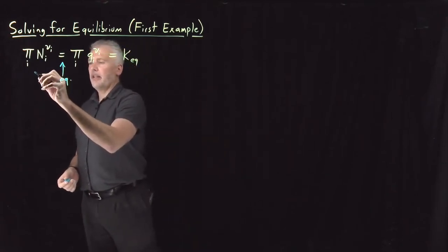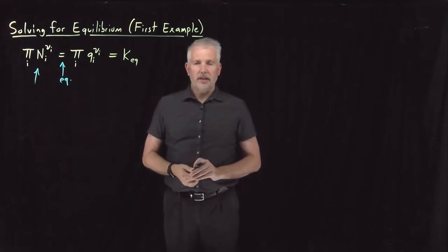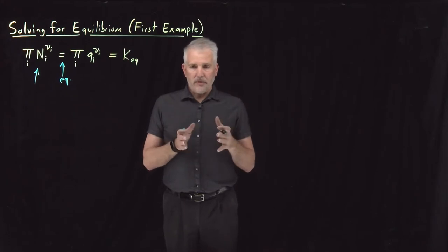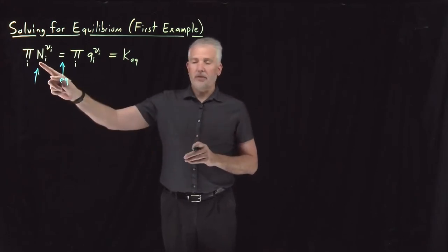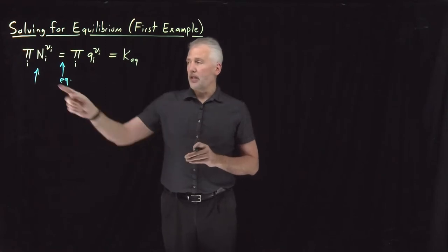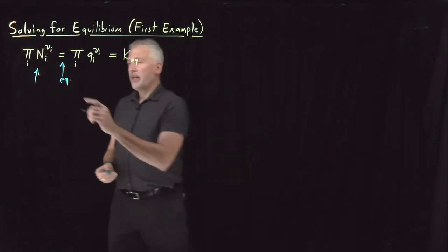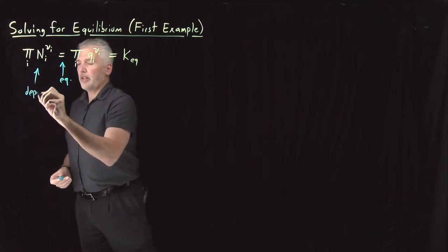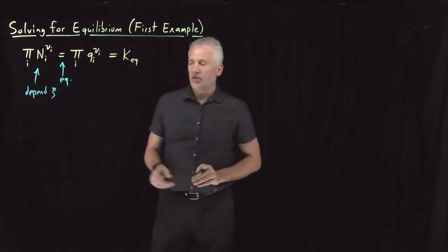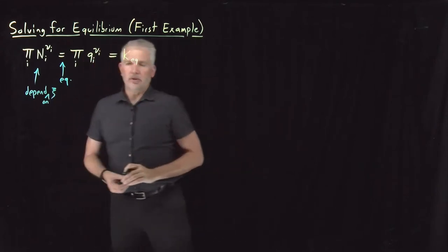On this side, these numbers of molecules are going to depend on the extent of reaction. If the reaction hasn't proceeded forwards or backwards, we have a certain amount of reactants and products. If it's proceeded a little bit forwards, the number of moles of products has changed. So these N values depend on the reaction coordinate that we're calling squiggle.